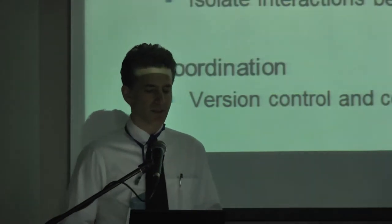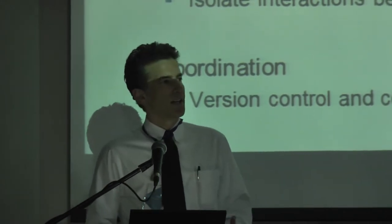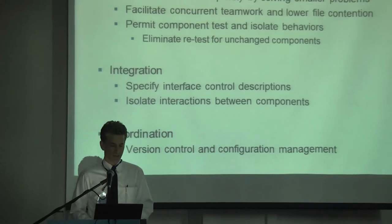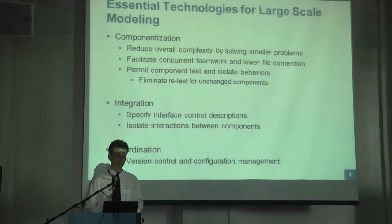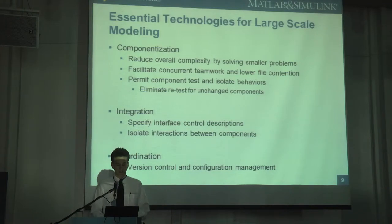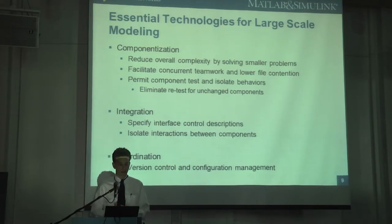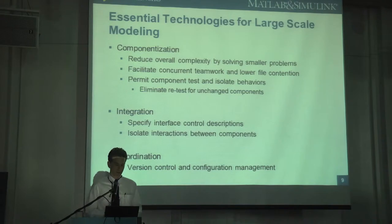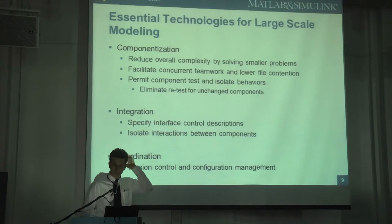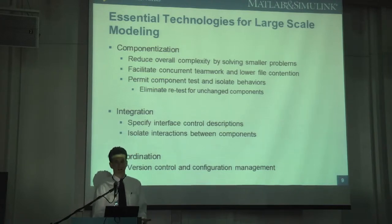When you know you're going to build a very large model, the first thing to do is stop and think about how to architect it. There are three basic philosophies: componentization, integration, and coordination. Componentization reduces overall complexity — a classic engineering approach of chunking something complicated into manageable pieces. You then need to specify the interfaces between components, and finally establish some form of version control. If you come back to these things after building the model, you will have trouble.